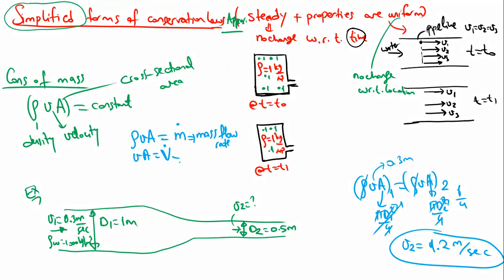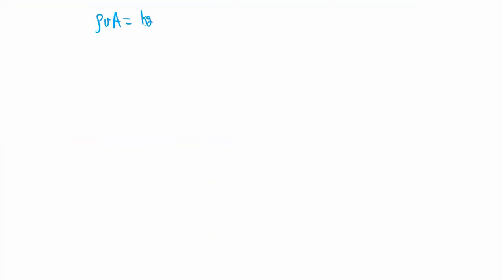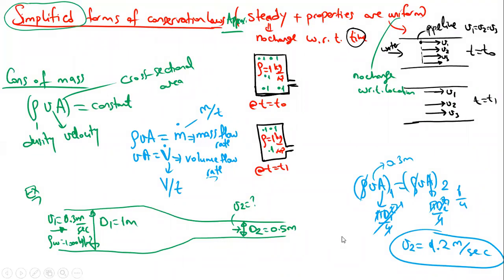The combination ρ·v·A is called the mass flow rate, m-dot. The combination v·A is called the volume flow rate, V-dot. For units of ρ·v·A: kg/m³ × m/s × m² = kg/s. Therefore this is m/t or m-dot. This is the conservation of mass. Now comes conservation of linear momentum.